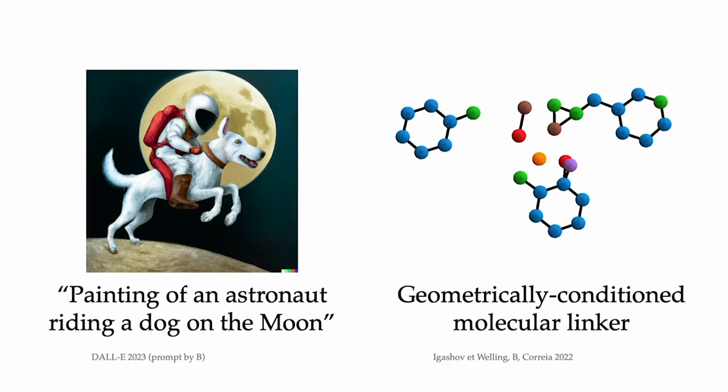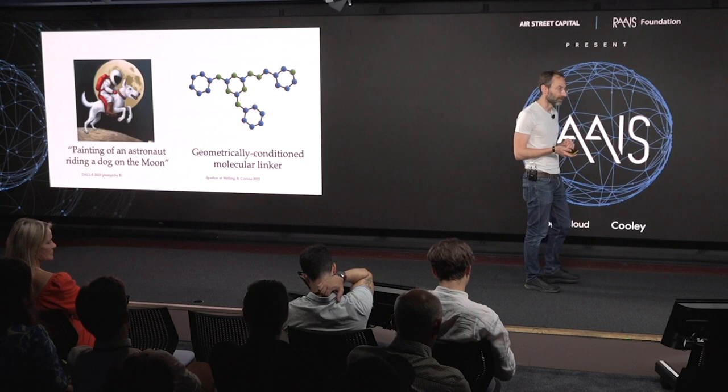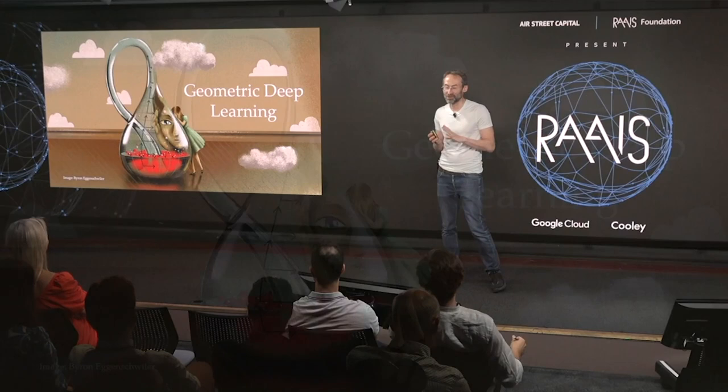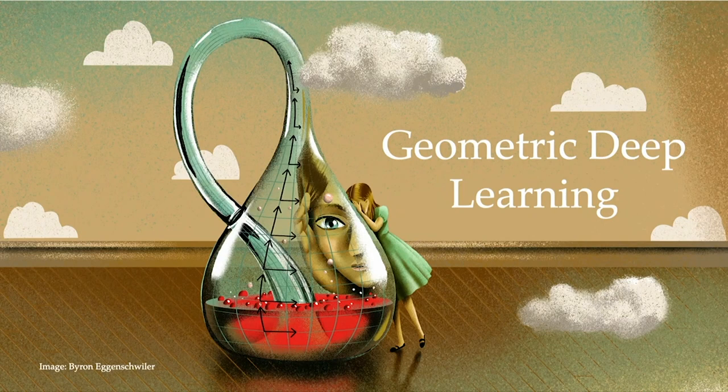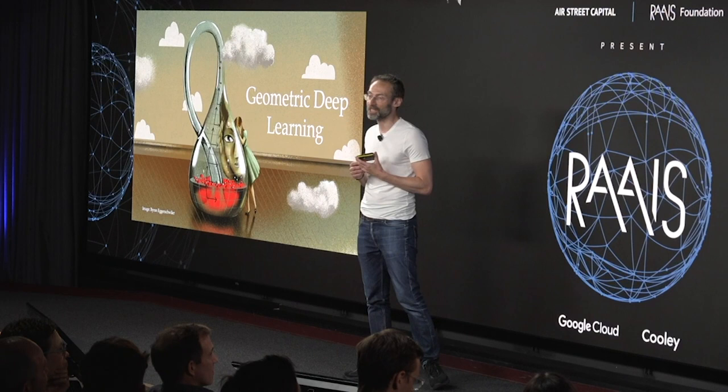Just to conclude: I hope I convinced you, or at least gave you an idea of how geometry — a very old concept with roots in ancient Greece and the works of Euclid — can be used in the modern day to understand and design new deep learning architectures. These can be used for a bunch of things, from three-dimensional virtual avatars to the design of drugs that could potentially cure currently incurable or difficult diseases. Thank you very much.